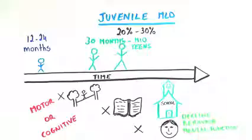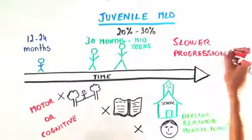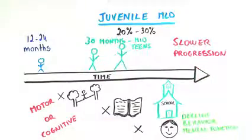Although the progression of juvenile MLD is slower than late infantile MLD, it is still very severe.